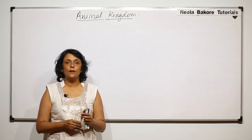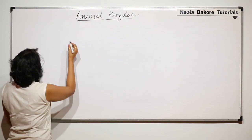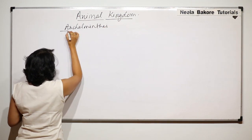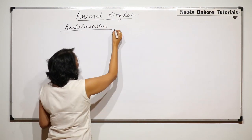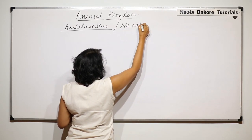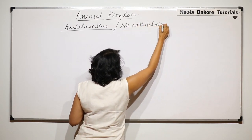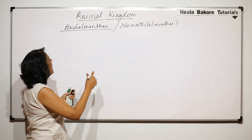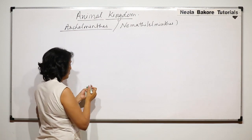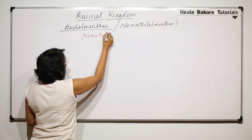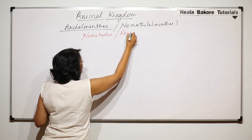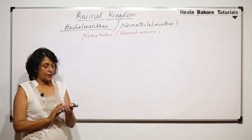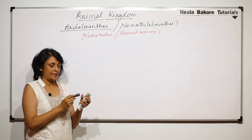We will now take up the next phylum in the animal kingdom, and the phylum is Aschelminthes, also known as Nematohelminthes. The animals placed in this phylum are known either as nematodes or are commonly known as roundworms. Let us first discuss the general characteristic features of this phylum and then we will look at examples.